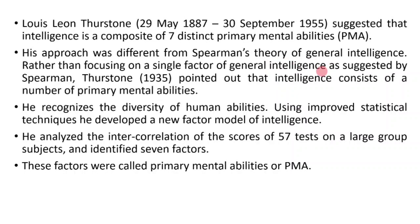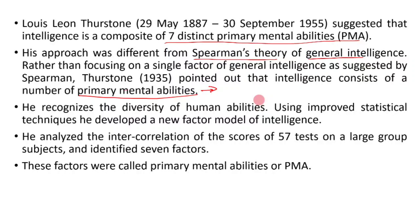Louis Leon Thurston suggested that intelligence is composed of seven distinct primary mental abilities. He criticized Spearman and said that general intelligence, or the general factor, does not exist as a single thing — it is an aggregation or combination of primary mental abilities.